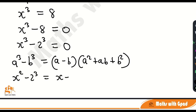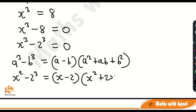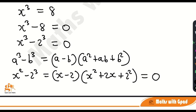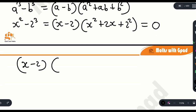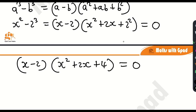So x cubed minus 2 cubed equals (x minus 2) times (x squared plus 2x plus 2 squared), all equal to 0. Let me simplify this a little bit further: x minus 2, times x squared plus 2x plus 4, all equal to 0.